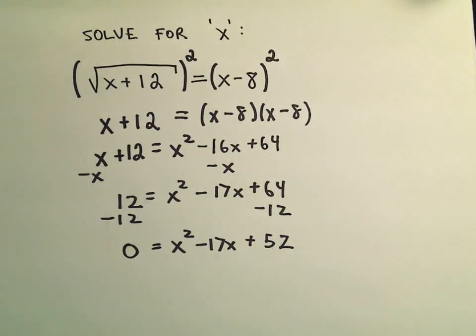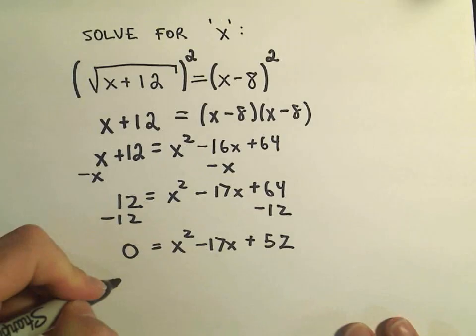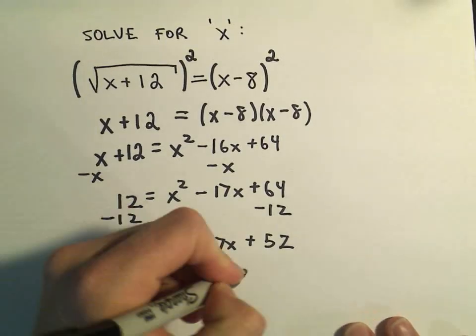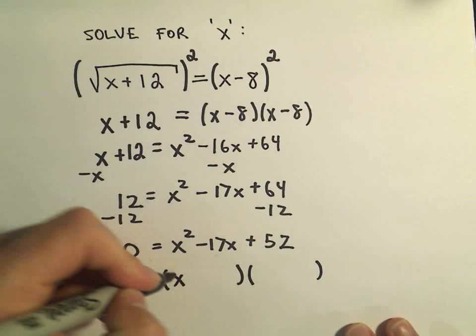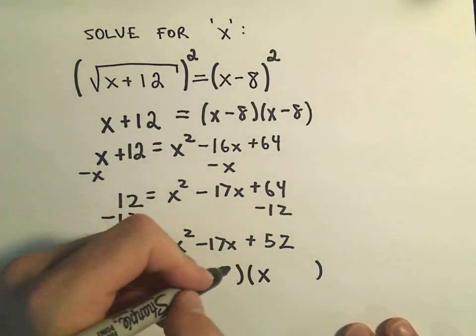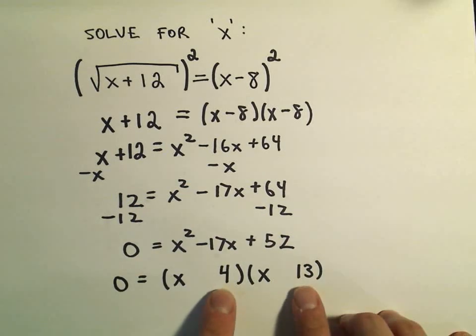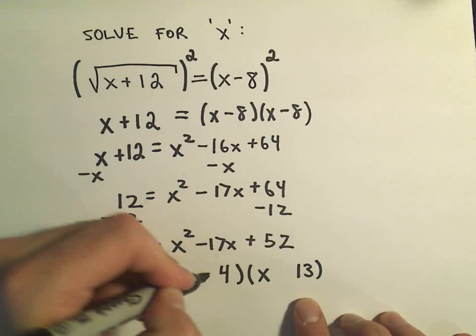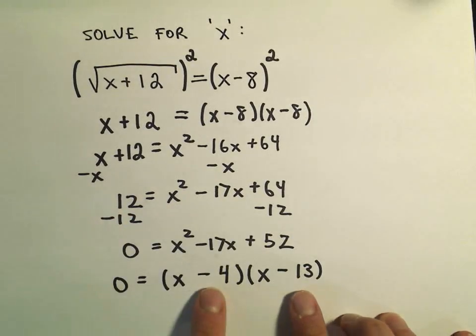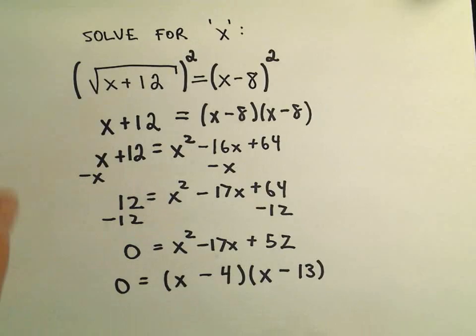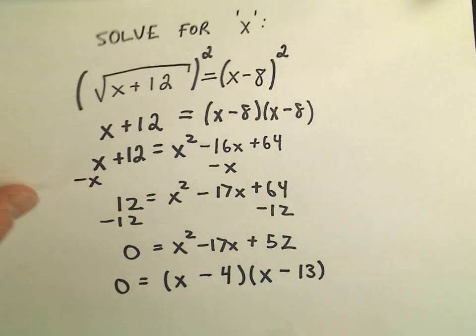And now I'm thinking, do I know two numbers that multiply to 52 but add up to negative 17? I think I've got two in my head. So I think 4 and 13. If we multiply 4 and 13, that's going to give us 52. If we make them both negative, well, that still gives us positive 52. And notice these also, if you take negative 4 and negative 13 and add them, we do get negative 17. So that looks like a correct factorization to me.